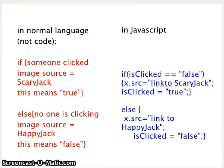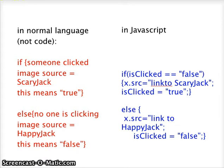On the red side, we're saying if someone clicked, the image source should be Scary Jack. Since someone clicked, the value for our variable is true. The statement isClicked equals true simply means that the lines preceding it define what it means to be true — someone clicked.